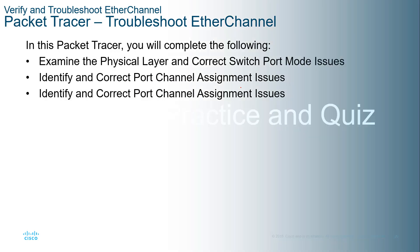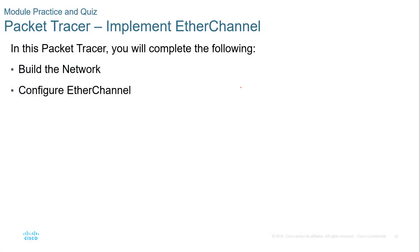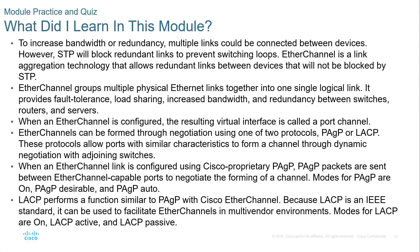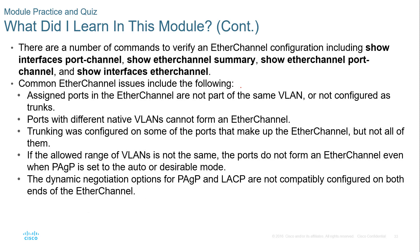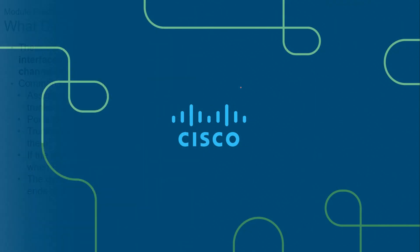We have a lab going over this, and that's it for this chapter. What we learned in this module: the reason we do EtherChannel, how EtherChannel helps mitigate STP, how it helps with fault tolerance, PAGP (Cisco proprietary), and LACP (open standard). We looked at the modes for both PAGP and LACP and which combinations allow EtherChannel establishment. We looked at how to configure and troubleshoot them, the appropriate show commands, and how to decode those show commands. Thank you.